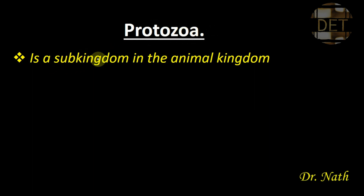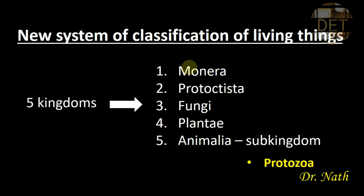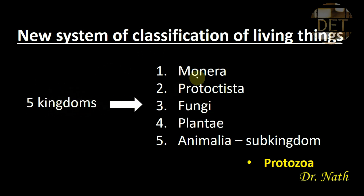Protozoa is a sub-kingdom in the animal kingdom. In the new system of classification of living things, living things are classified into five kingdoms: kingdom Monera, kingdom Protoctista, kingdom Fungi, kingdom Plantae, and kingdom Animalia.